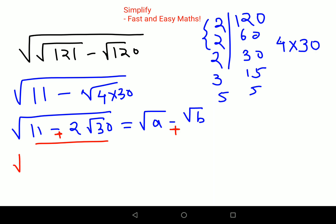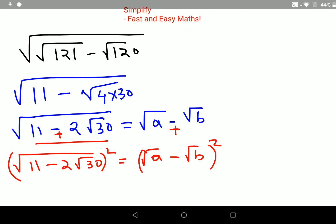The next step is taking squares on both sides. Squaring both sides, your answer becomes 11 - 2√30 = a + b - 2√ab.